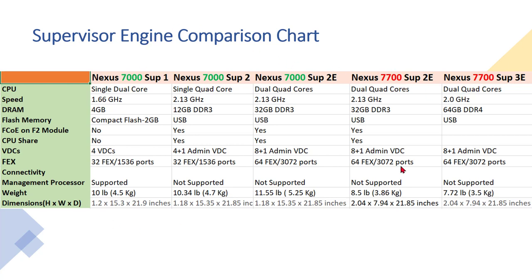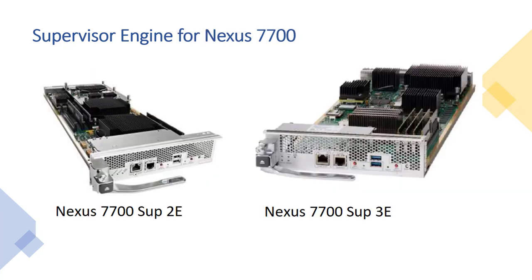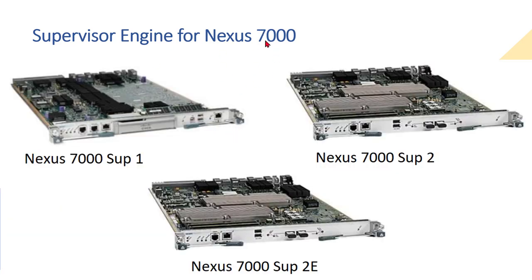Two supervisor modules are for the 7700 and three are for the 7000. VDCs — Virtual Device Contexts — allow a virtual way of creating switches; one supervisor supports up to four VDCs, while additional supervisor modules have one admin VDC for administration only. FAX means Fabric Extender — the slide shows how many fabric extenders can be connected per supervisor in a chassis. The photographs show the 7700 SUP2E and SUP3E, which are half-slot modules inserted left and right, and for the 7000, SUP1, SUP2, and SUP2E.